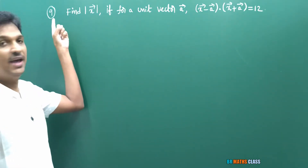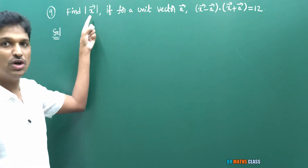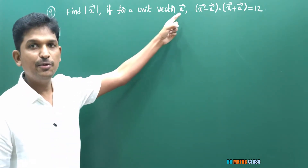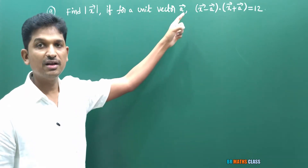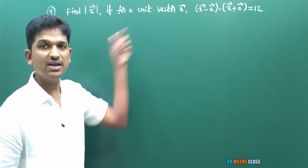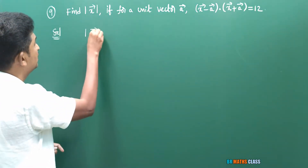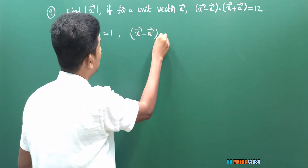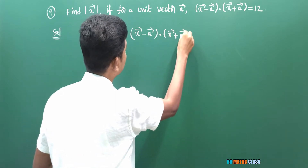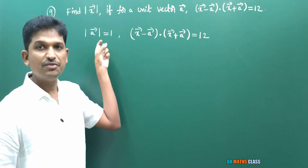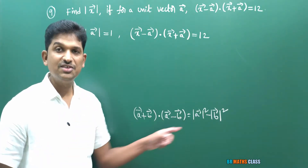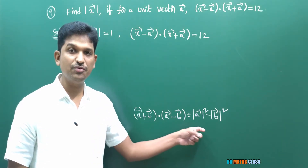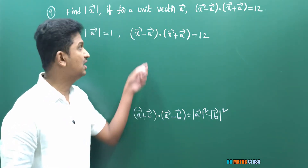You observe question number 9 — find magnitude of X̅ for a unit vector A̅. Since A̅ is a unit vector, |A̅| = 1. They given that (X̅ − A̅) · (X̅ + A̅) = 12. We learned the formula: (A̅ + B̅) · (A̅ − B̅) = |A̅|² − |B̅|². Applying this gives |X̅|² − |A̅|² = 12.